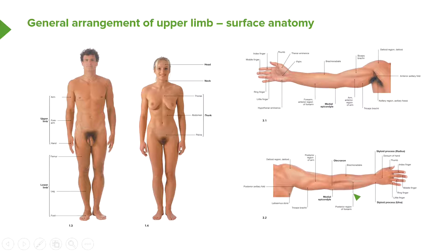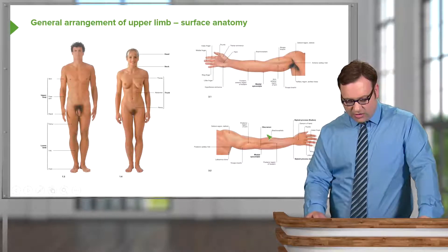Looking at the posterior aspect, we can again see this muscular region caused by the mass of the deltoid muscle. On the posterior region, we can see impressions for the various heads of the triceps muscle. Again, we can see the medial epicondyle from the posterior view, just as we saw it anteriorly. We can also see the olecranon, this bony prominence on the posterior surface of the elbow. Moving into the forearm, on the lateral aspect — running along the same aspect as the thumb — we can see brachioradialis.